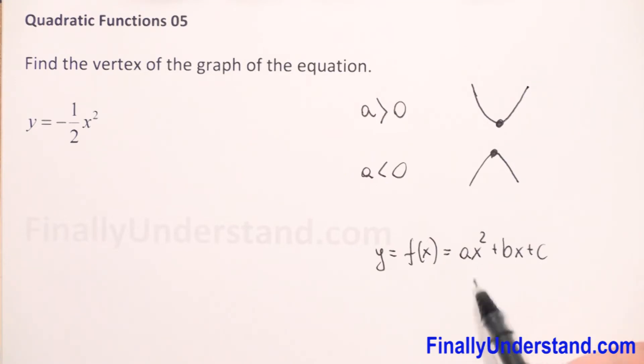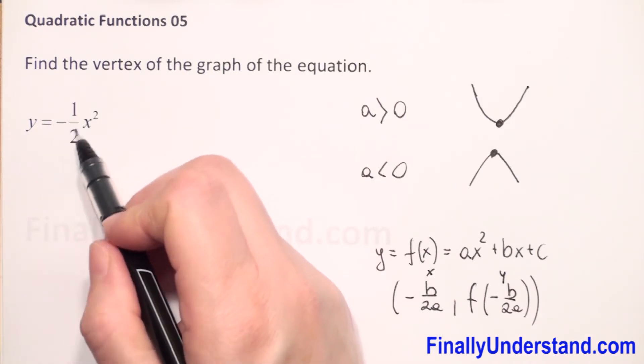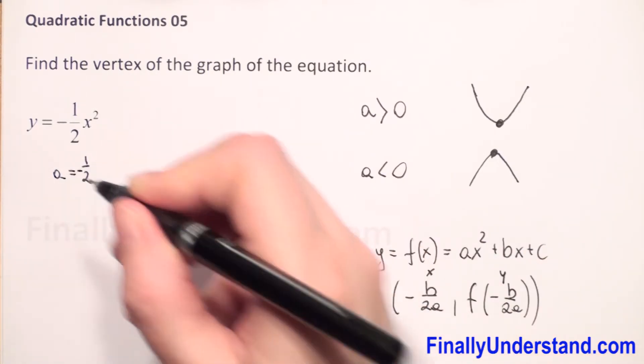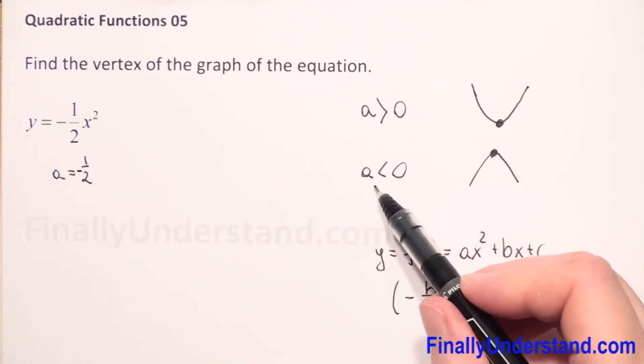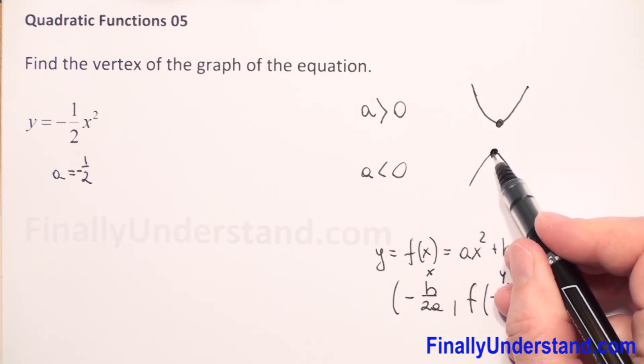When we have general form of quadratic function, the coordinates of the vertex are negative b over 2a, and the second coordinate is value of our function for negative b over 2a. In our example, a coefficient before x squared is negative one half, so our parabola is open down. We need to find this point x y coordinates.